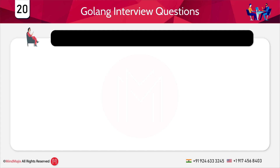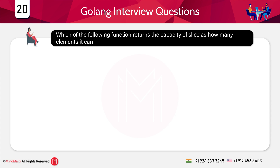Which of the following function returns the capacity of a slice — how many elements it can accommodate? Options: a) size method, b) length method, c) cap method, d) none of the above. The answer is c) the cap method. With the cap method, I can find out the capacity of a slice.